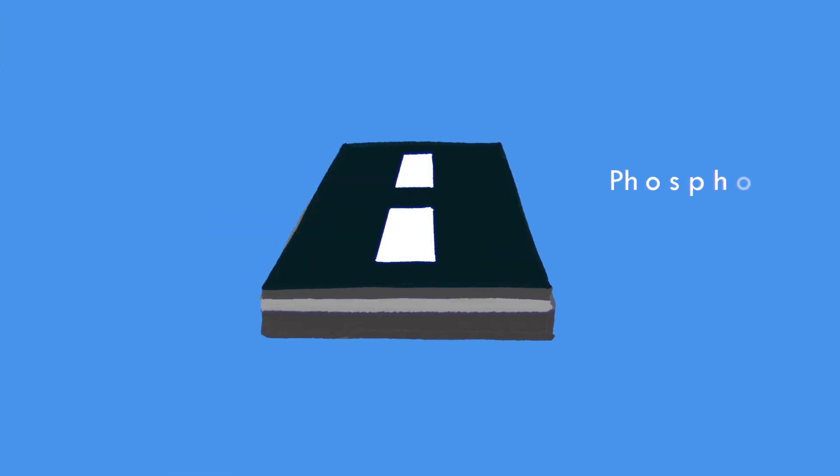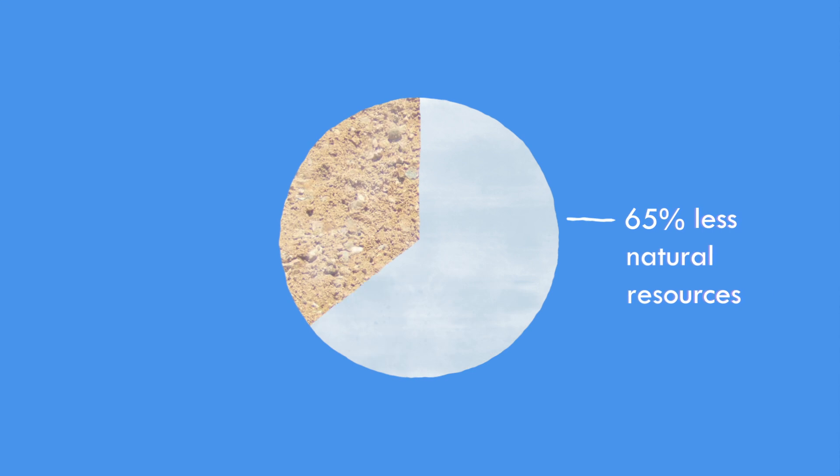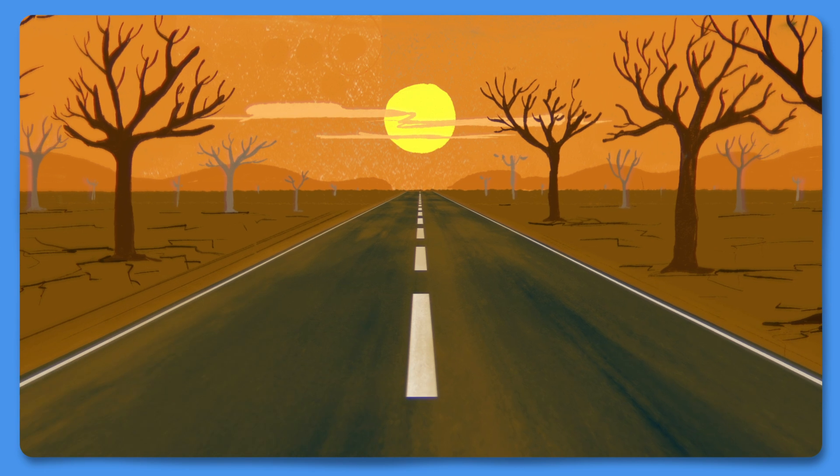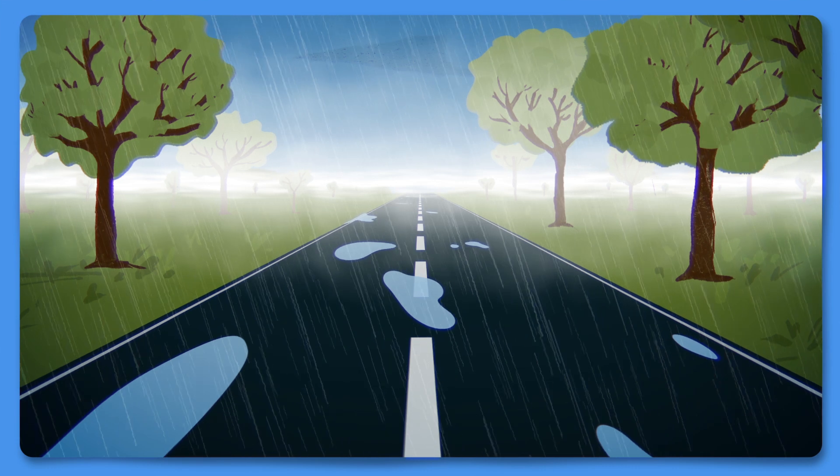In road construction, phosphogypsum can be mixed with other materials to create a stable, durable base. PG can replace traditional resources like sand and gravel by up to 65%. And it's not just effective, it's resilient, making it great for roads in all kinds of climates.